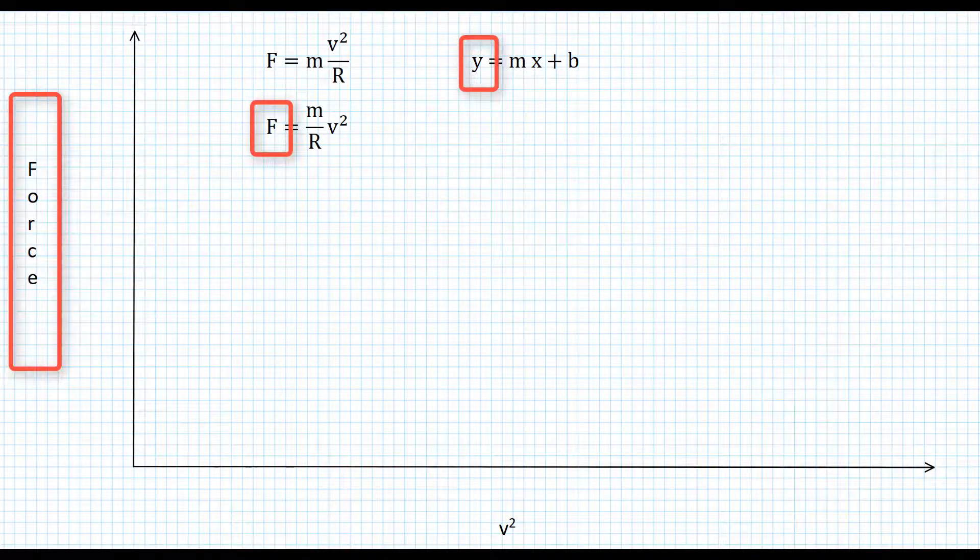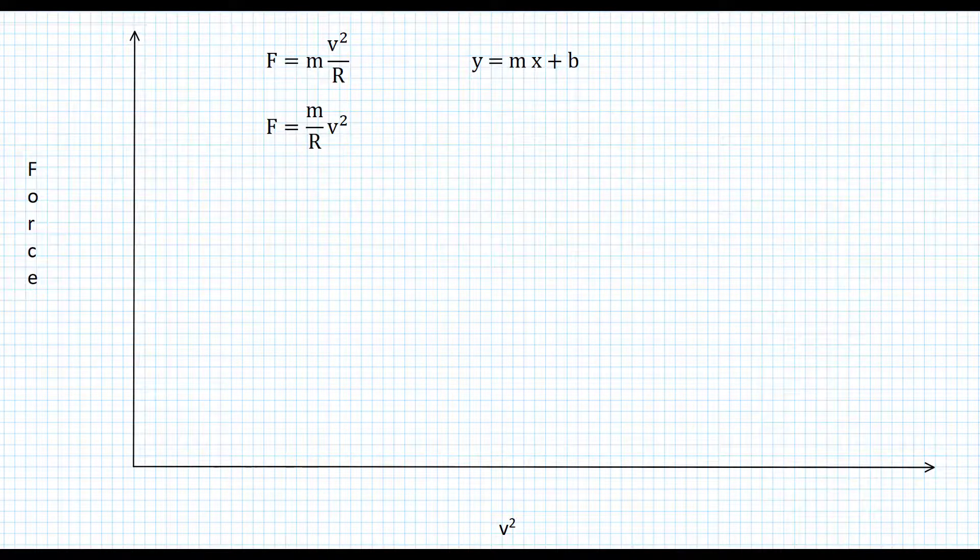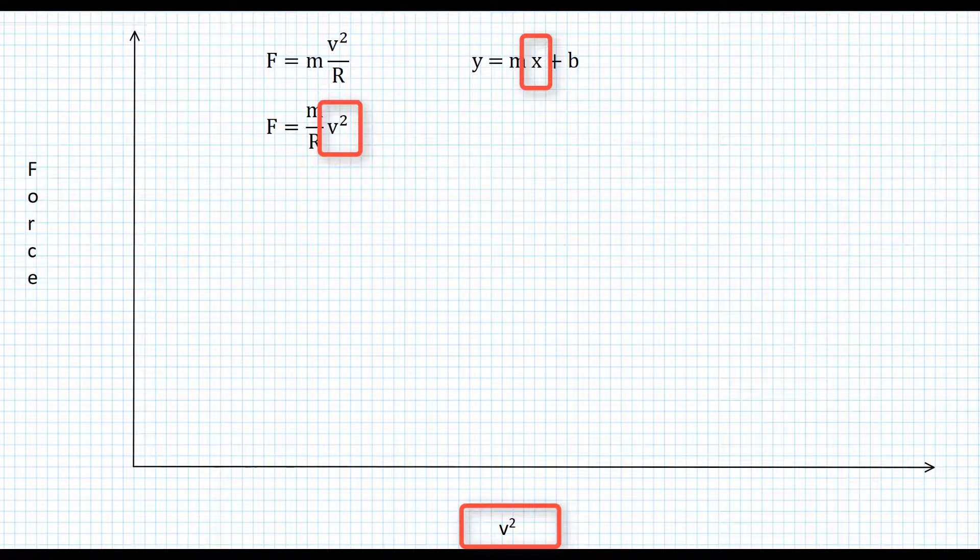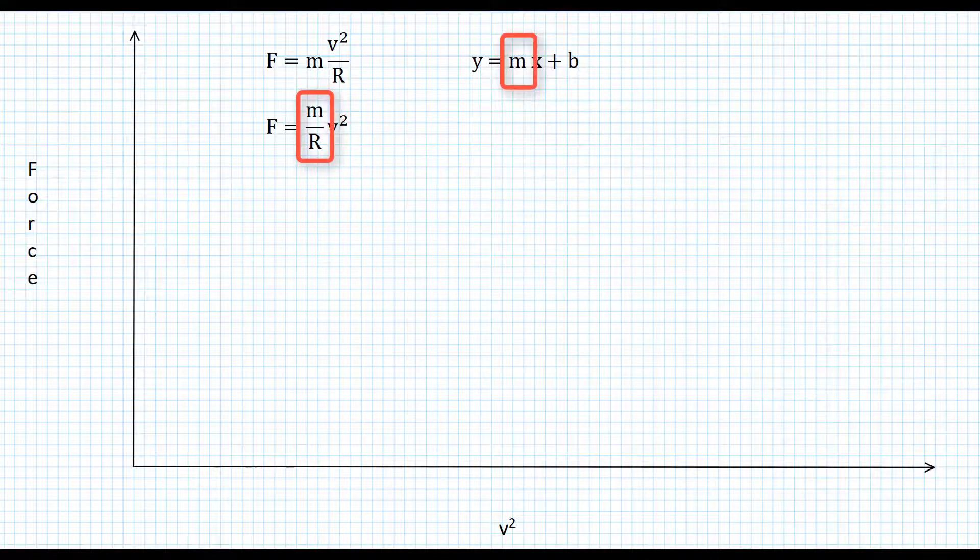If I plot force on the y-axis and I plot v squared on the x-axis, then the slope of that line should be the mass of my towels divided by the radius.